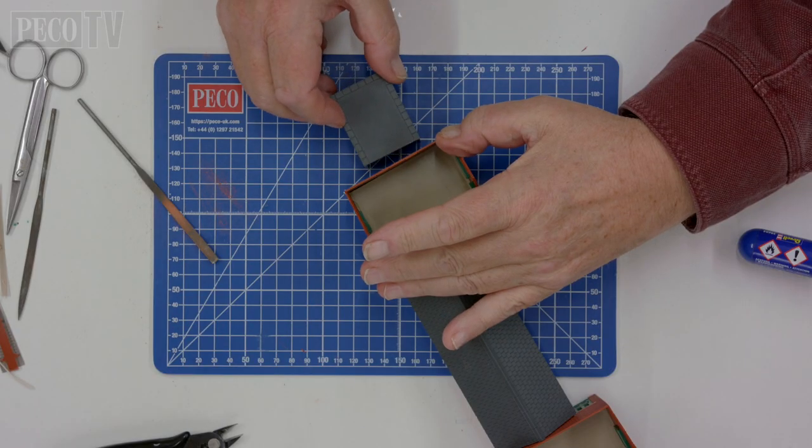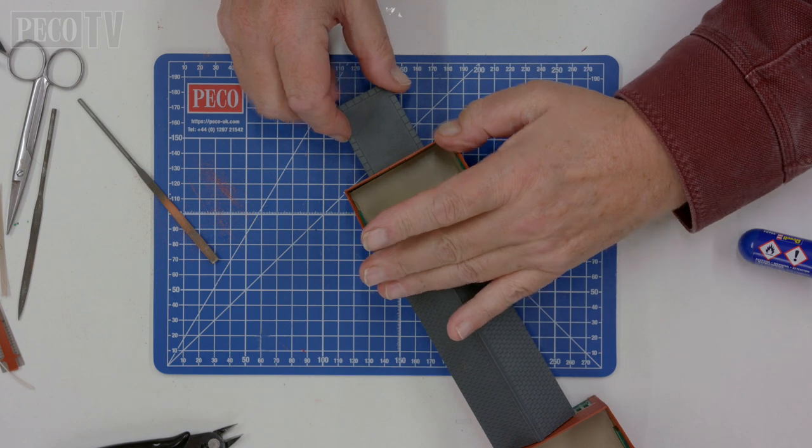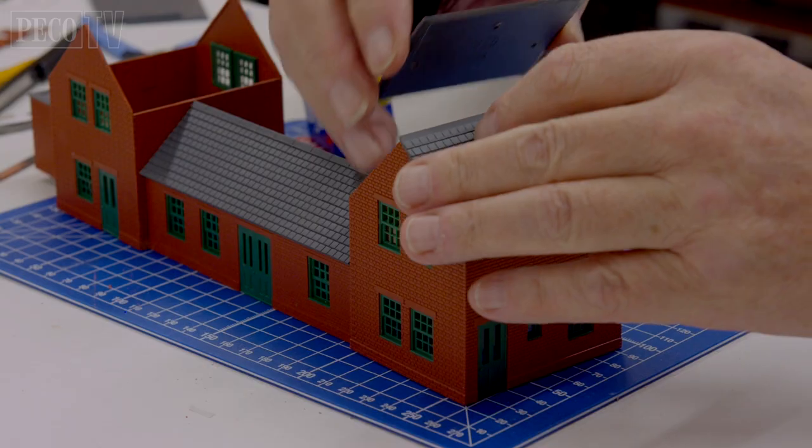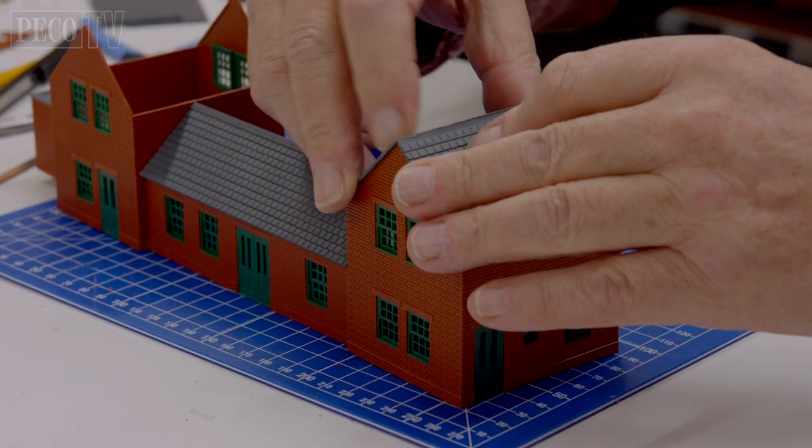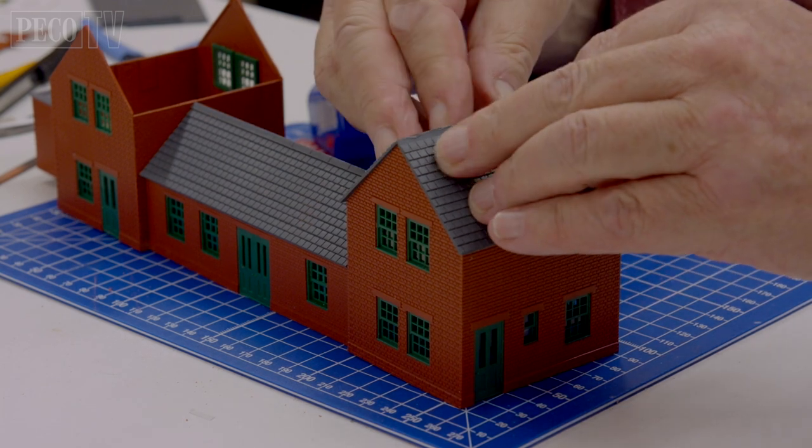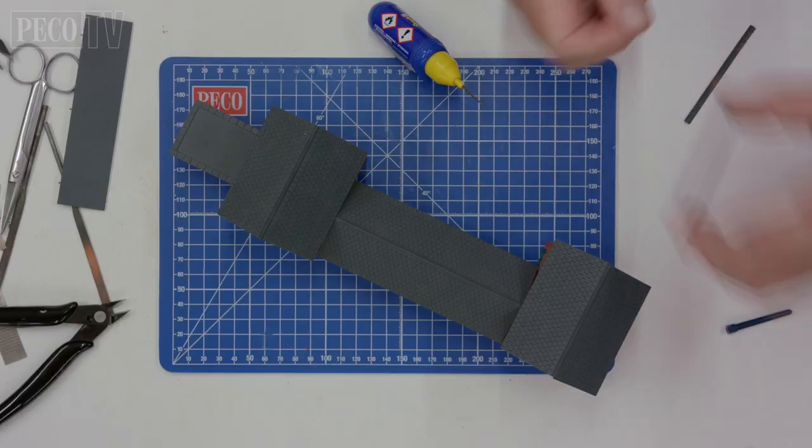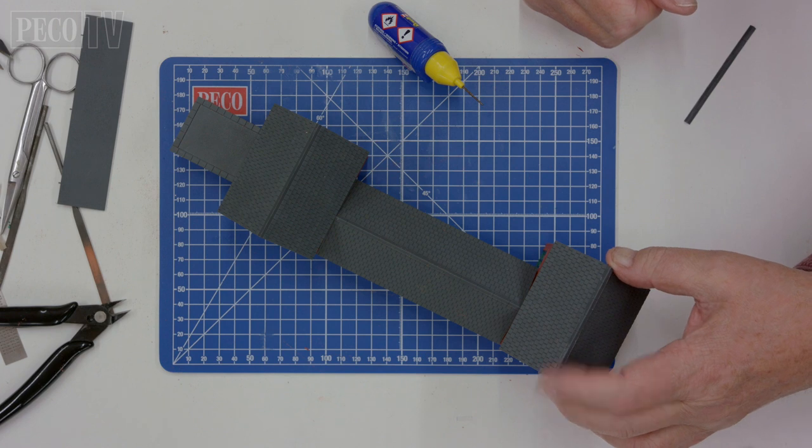Now attach the toilet block to the desired end. Once the buildings are firmly together attach the station house roof on each end and then attach the roof ridges as well.